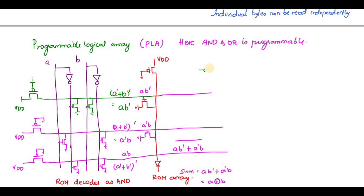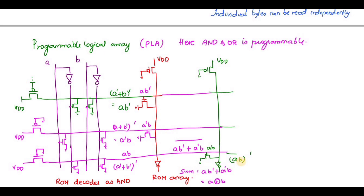To implement the Carry, we need A·B. This is how the half adder is implemented using a Programmable Logic Array (PLA).